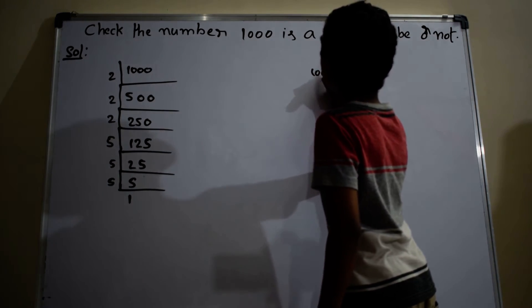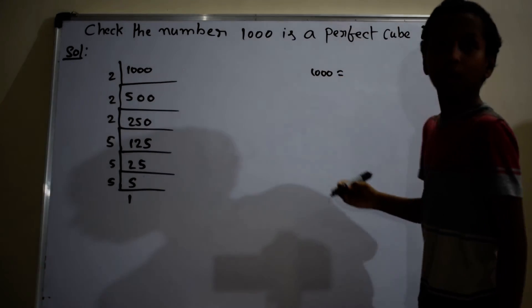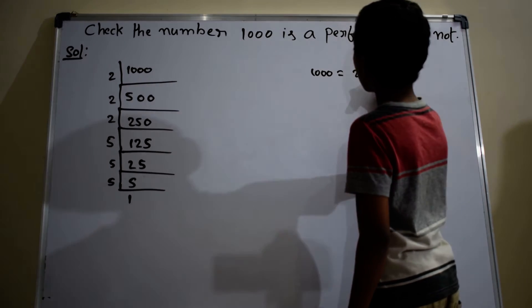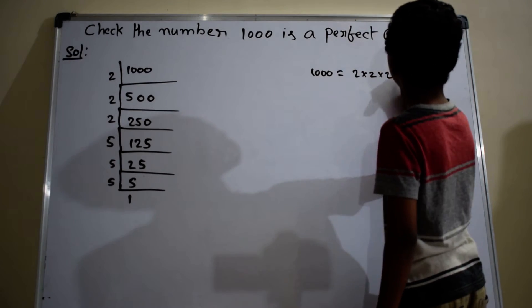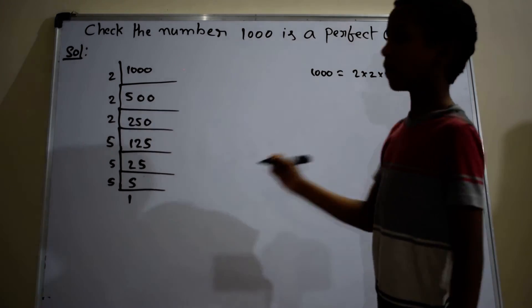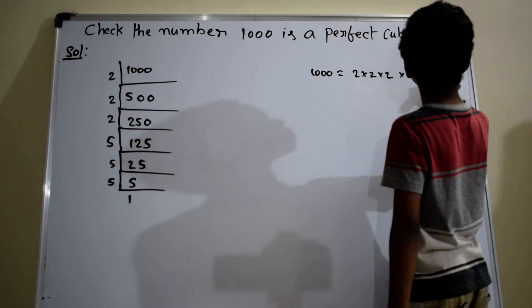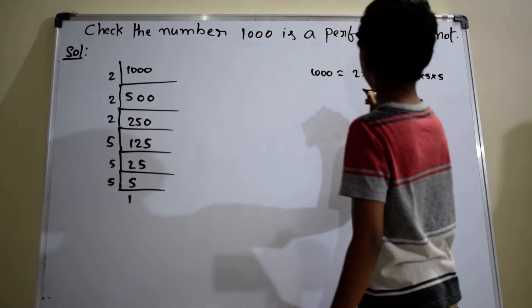Now 1000 can be written as 2 into 2 into 2 into 5 into 5 into 5.